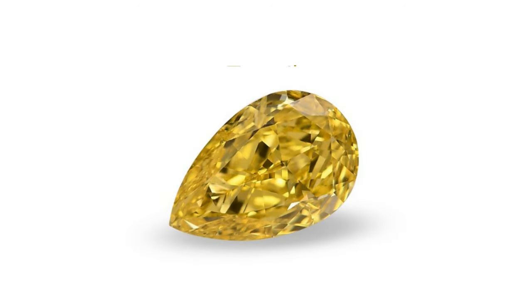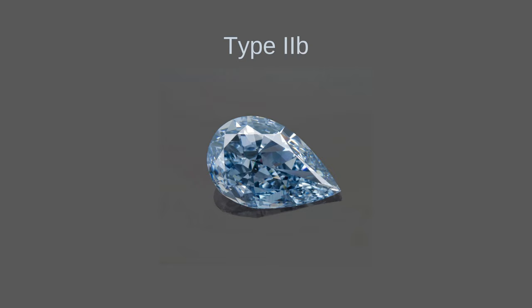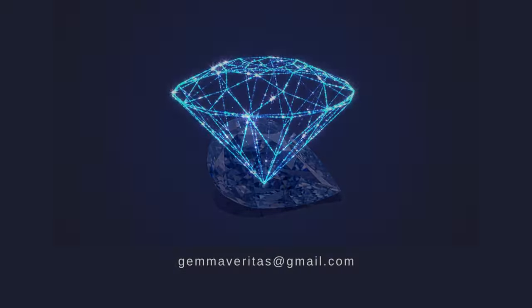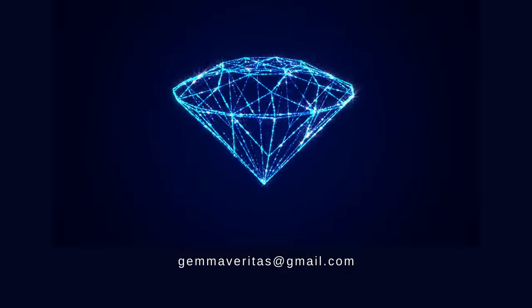Type 1B diamonds are rare and display a vibrant yellow color, while Type 2B diamonds, without nitrogen but with traces of boron, exhibit a distinct blue or bluish-gray appearance.